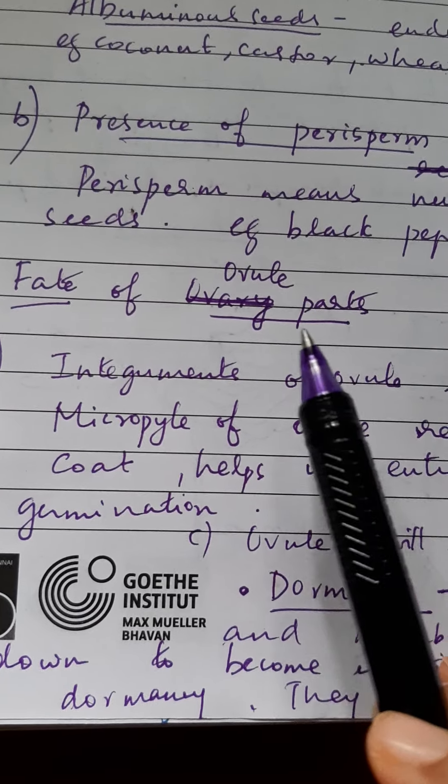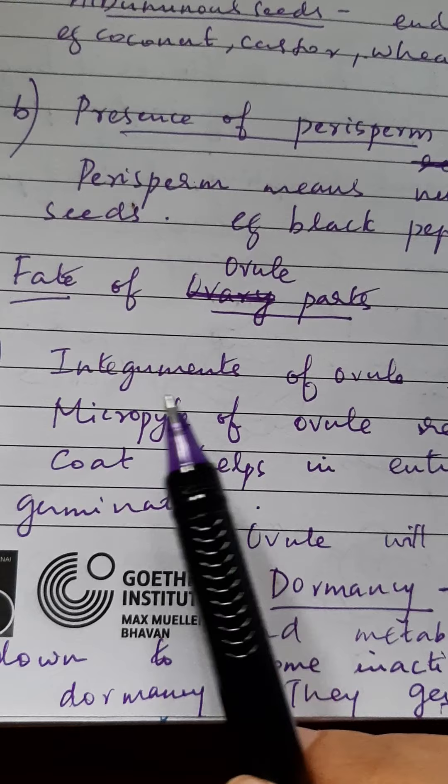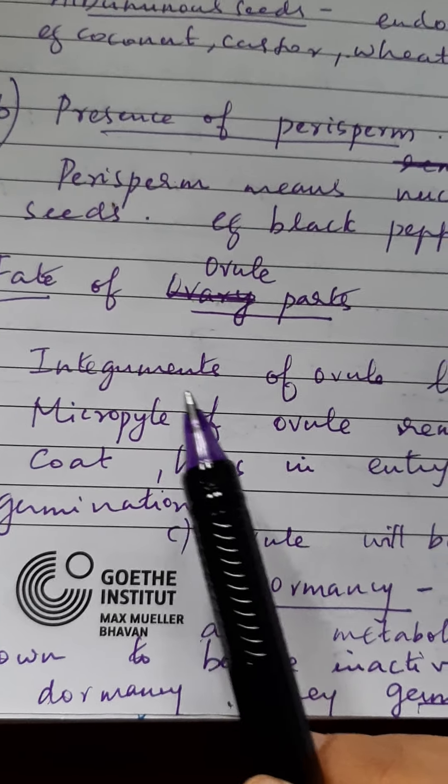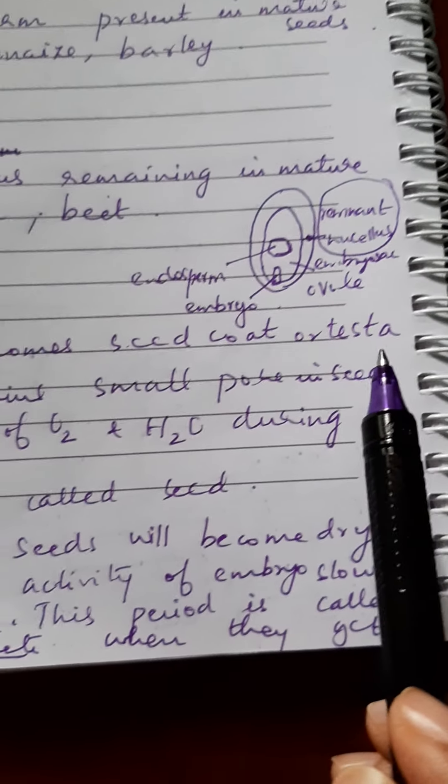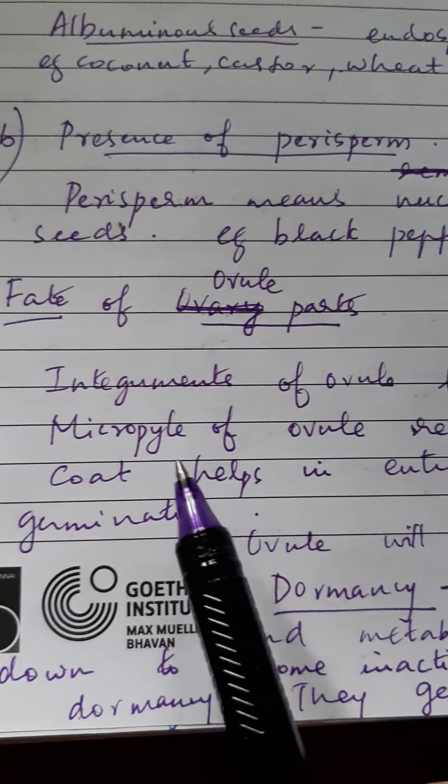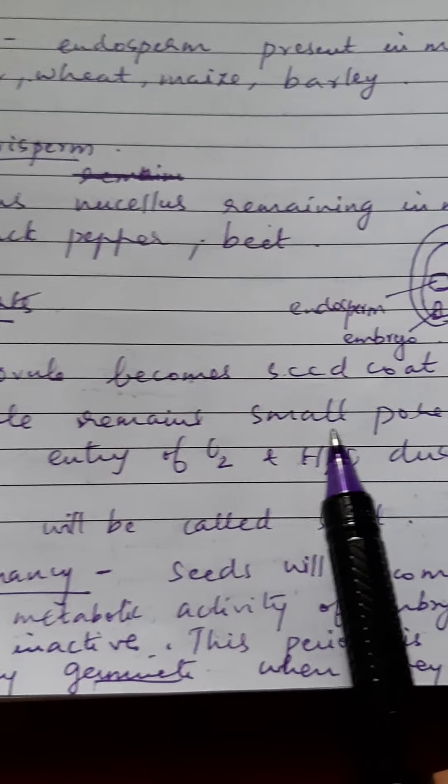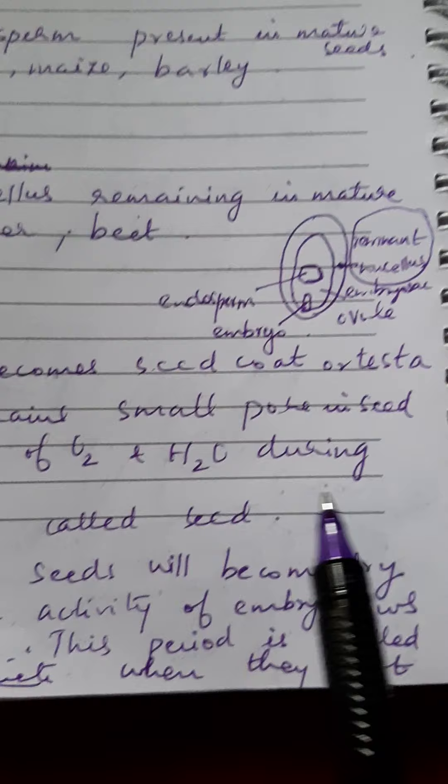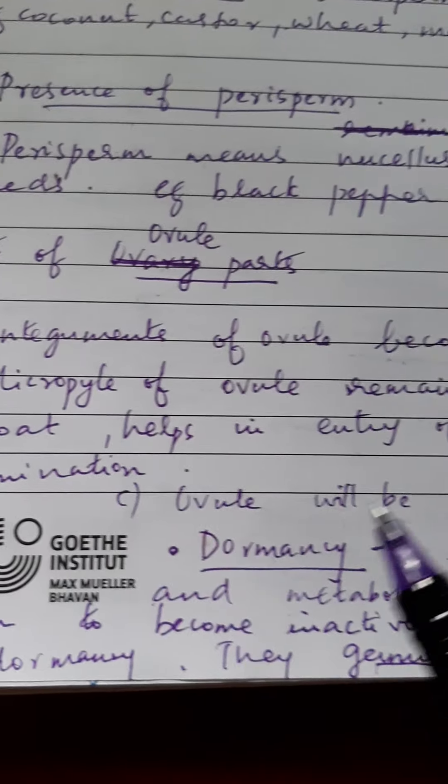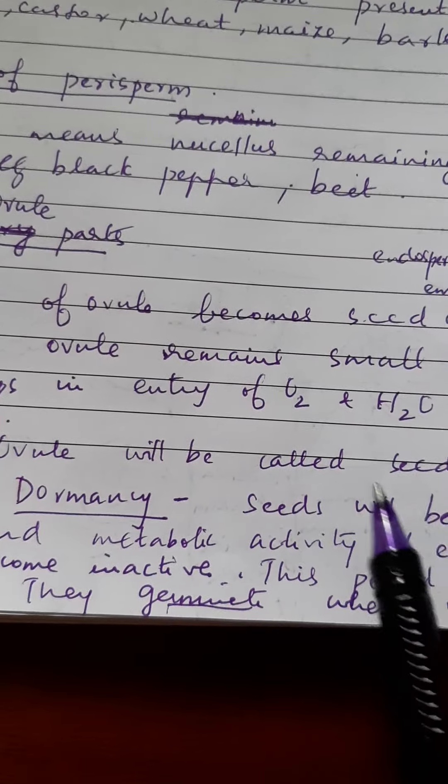Now the fate of ovule parts. What will these parts become in ovule? Integuments of ovule becomes seed coat or testa. Micropyle of ovule remains as a small pore in seed and it will help in the entry of oxygen and water during germination. Ovule will be called as seed.